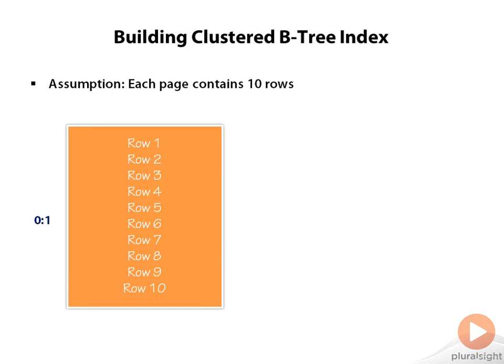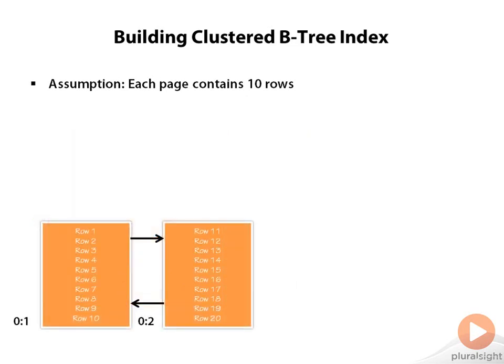If we have only 10 rows in our table, we only need a single page. Let's assume that we have 10 more rows from 11 to 20. In that case, we will need another page. The first page at leaf level node 0 will have rows 1 to 10, and the second page will have rows from 11 to 20.